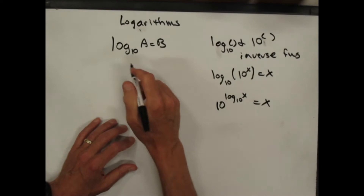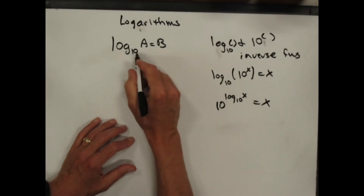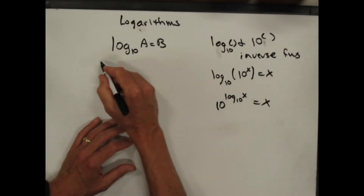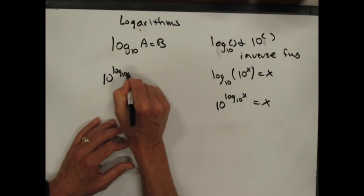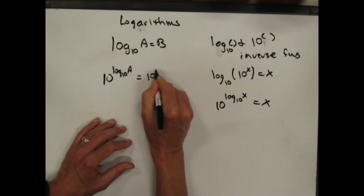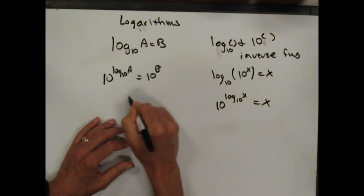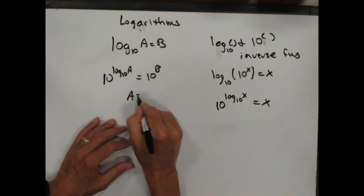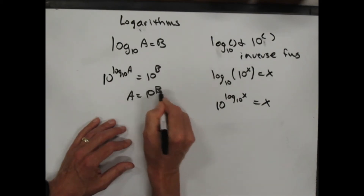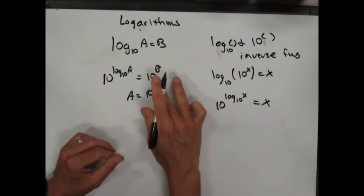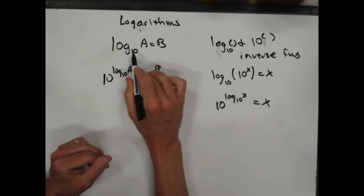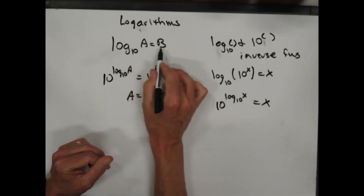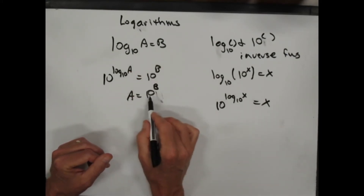And so if I want to solve this, I can say, if I take 10 to the both sides — so 10 to the log base 10 of a is equal to 10 to the b, or a is equal to 10 to the b. Not times b, but to the b. And so log base 10 of a equals b means a equals 10 to the b.